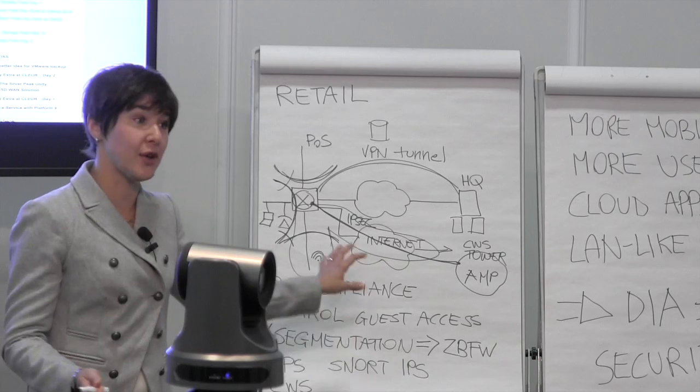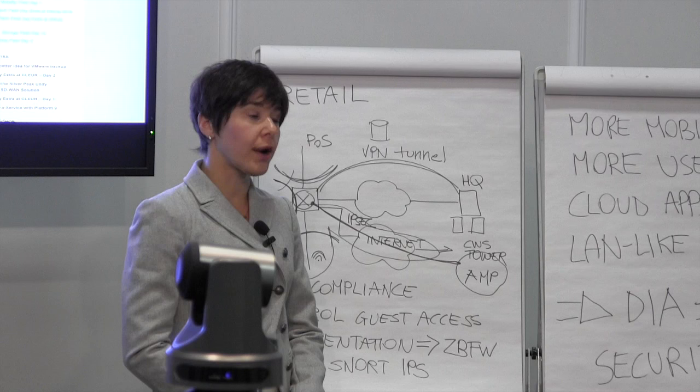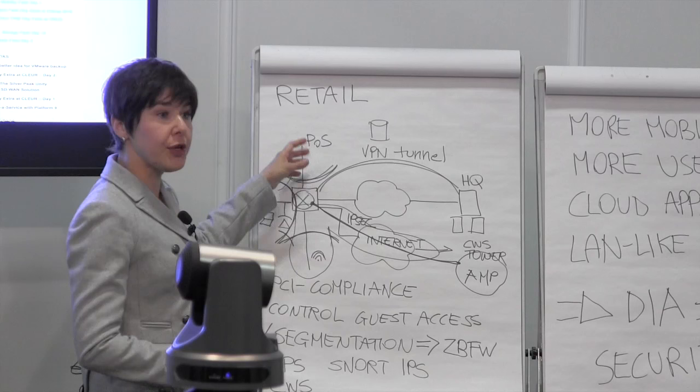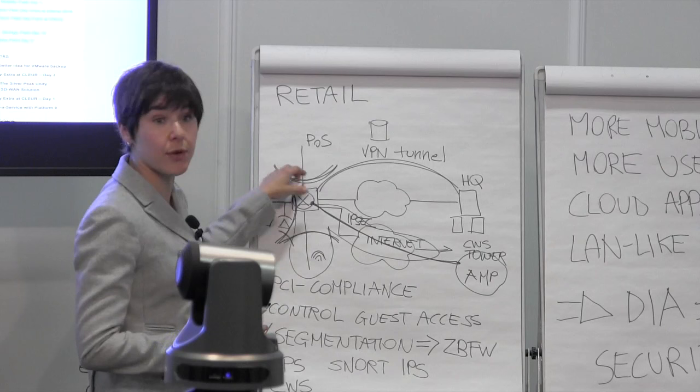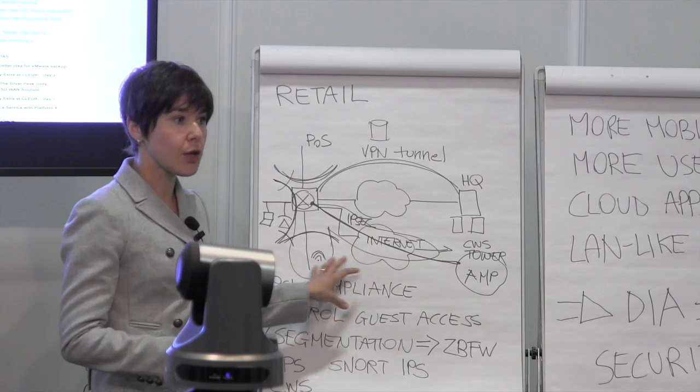Regarding whether Snort is dependent on zone-based firewall: no, they are all independent components. You can turn on and off whichever you need most in your network. The recommendation is that security is not a one-size-fits-all, so the more layers you have to protect your branch, the better — perimeter control and segmentation, intrusion prevention, URL filtering, and malware protection, all layered on top of each other.